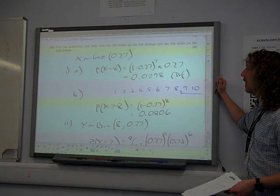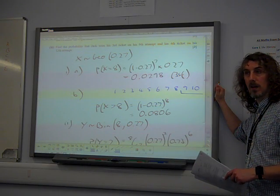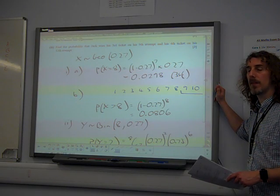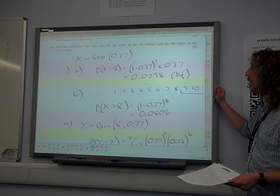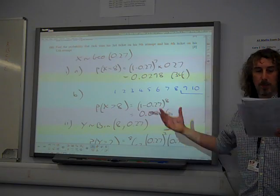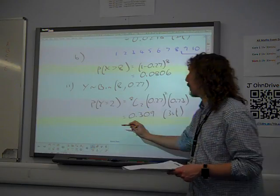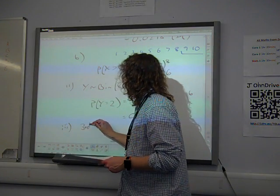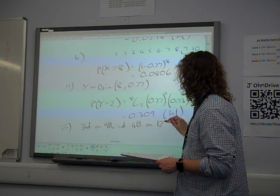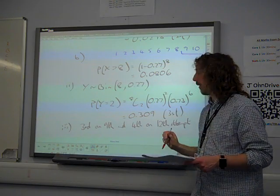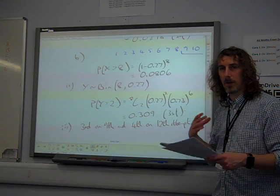Find the probability that Jack wins his third ticket on his ninth attempt, and his fourth ticket on his twelfth attempt. Again, it's one of those questions that you need to read a couple of times and think about what is actually going on here. It's an AND thing, so you're wanting the probability for the whole lot of this. All of this happening. We want the third ticket on the ninth attempt, and the fourth on the twelfth. Right. Third ticket on the ninth attempt, fourth on the twelfth attempt. So what does that mean actually? Let's pull that apart.